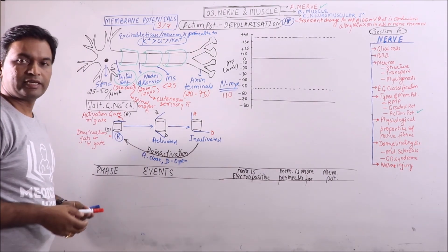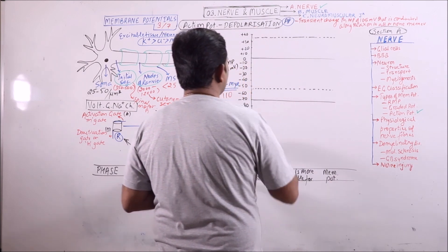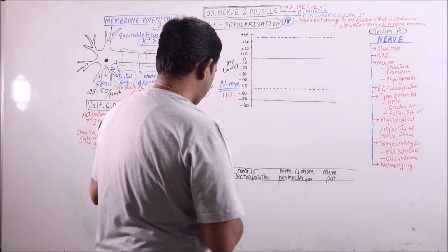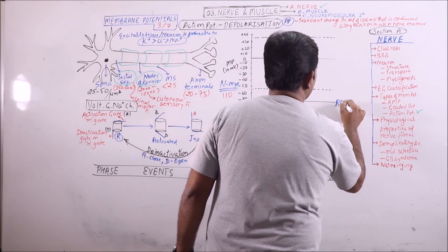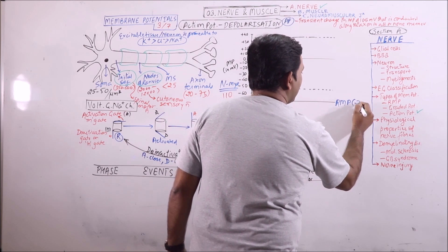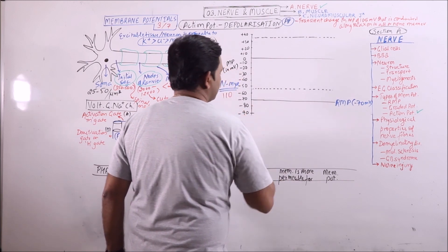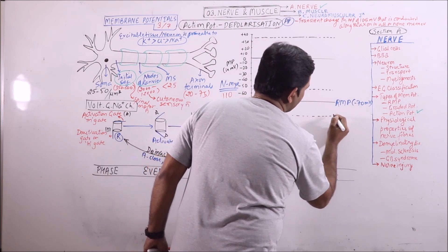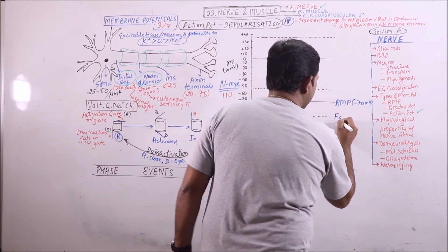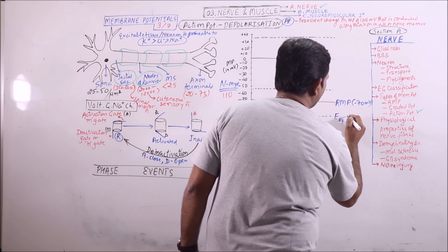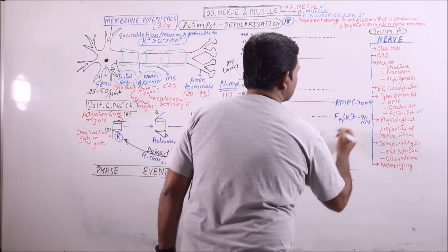Now, how the action potential is initiated and propagated. Before discussing that, we should look at important stages on the membrane potential graph. The resting membrane potential is minus 70 millivolts. Minus 90 millivolts is the equilibrium potential for potassium ion.